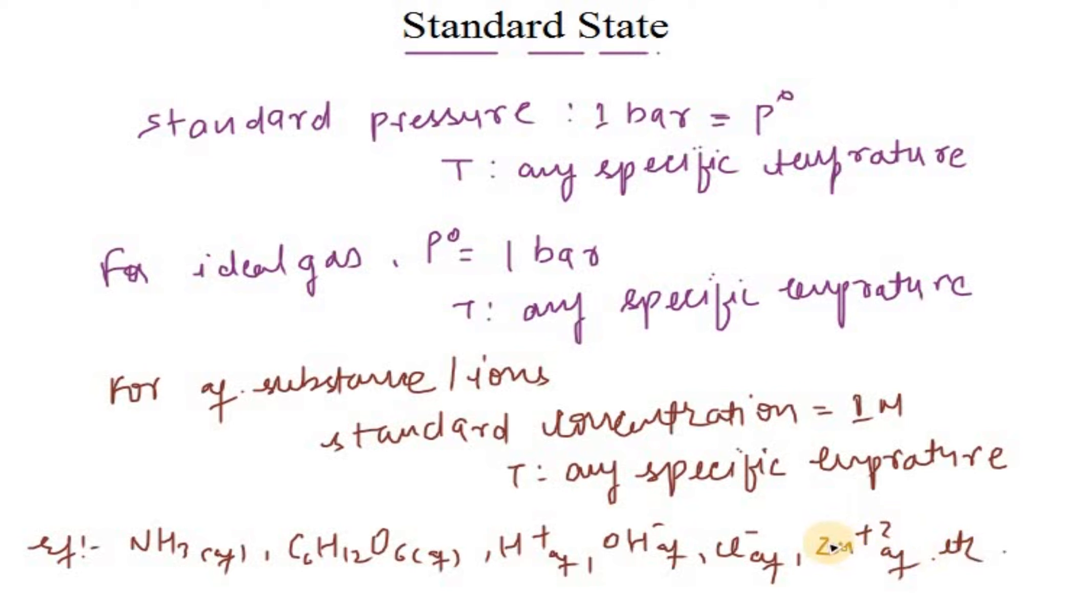All these forms, whenever we have a solution or solute, that solution is called standard concentration when the concentration is 1 molar. So these are 1 molar, and for an ideal gas the standard state is when pressure is 1 bar. Temperature has no restriction—it could be any temperature—but for ideal gas pressure is 1 bar and for aqueous substances ion concentration is 1 molar. These are called thermodynamically standard states.